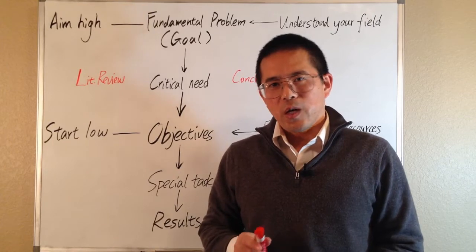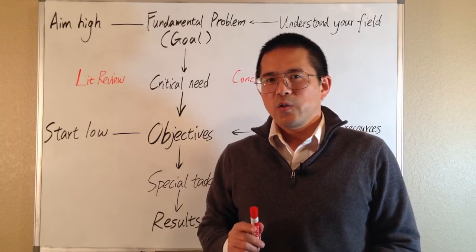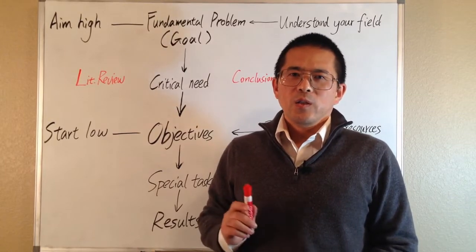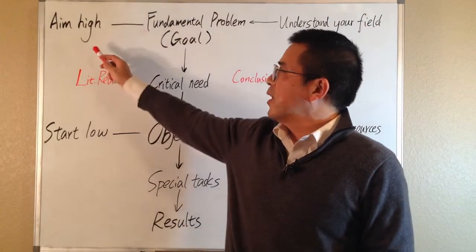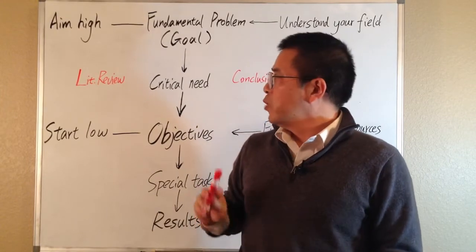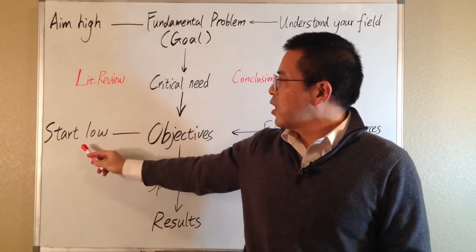When you set your research objectives, there are two important principles. The first principle is to think big and aim high. The second principle is to be realistic and start low.